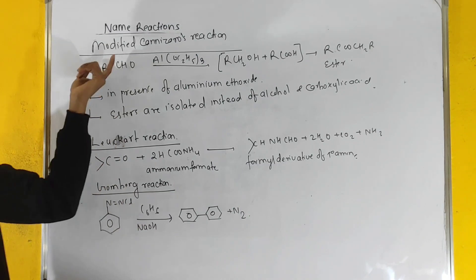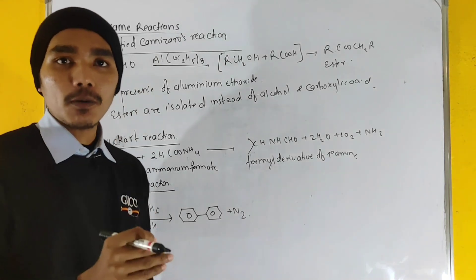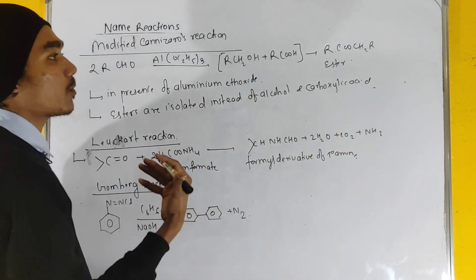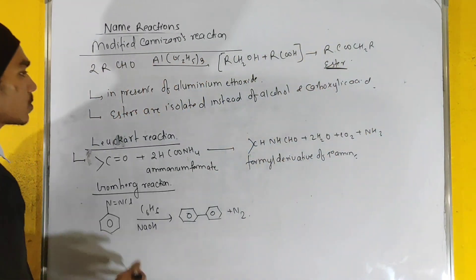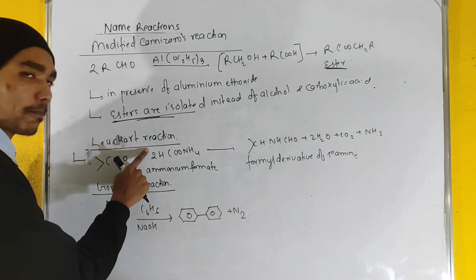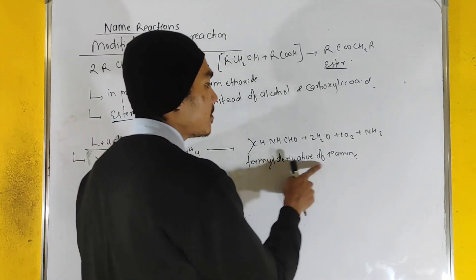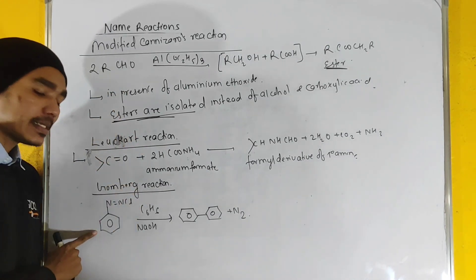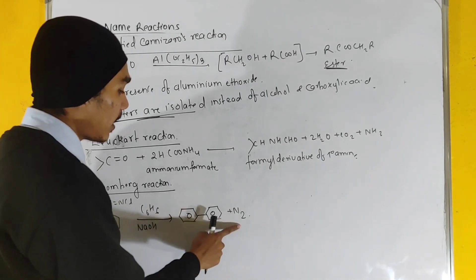We have modified Cannizzaro reactions using aluminum ethoxide in presence of carbon dioxide to isolate esters instead of alcohol and carboxylic acid. We have the Leuckart reaction using ammonium formate to form primary amines. We have the Guldberg reaction using benzene diazonium chloride condensation, forming diaryl compounds.